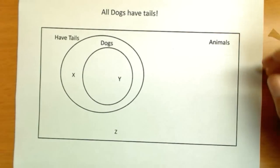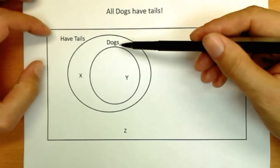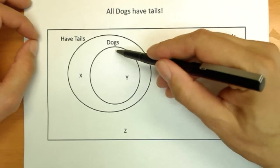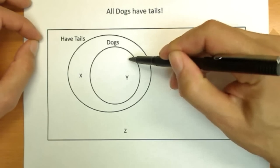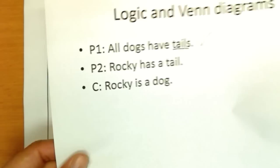Now we get to this picture here. The third possibility that we saw in the previous video. The dog circle is inside the animals that have tails. All dogs have tails. Well, yes. Anywhere you put a spot for a dog, it is inside the tail circle. So this would agree with premise one. All dogs have tails.